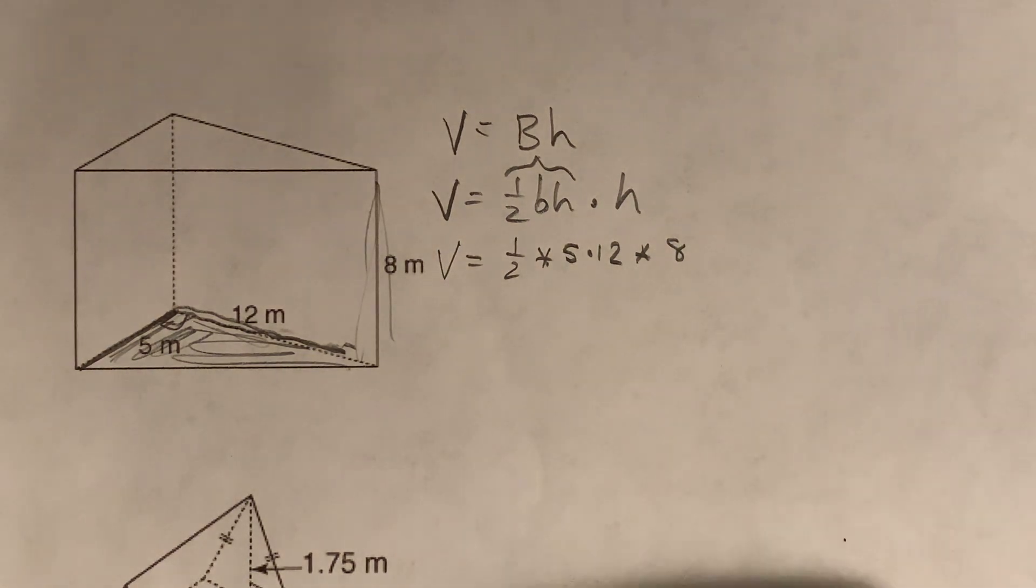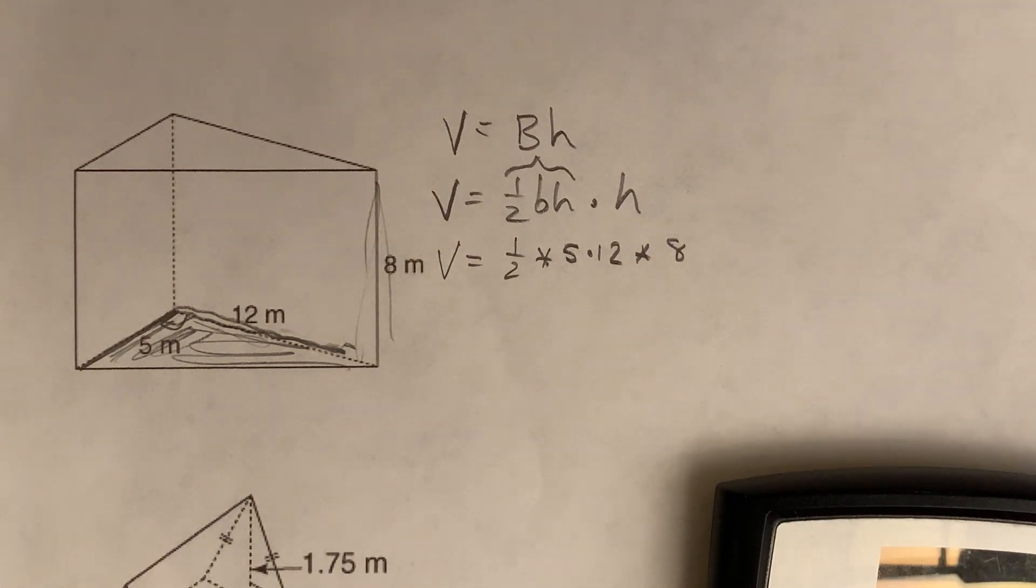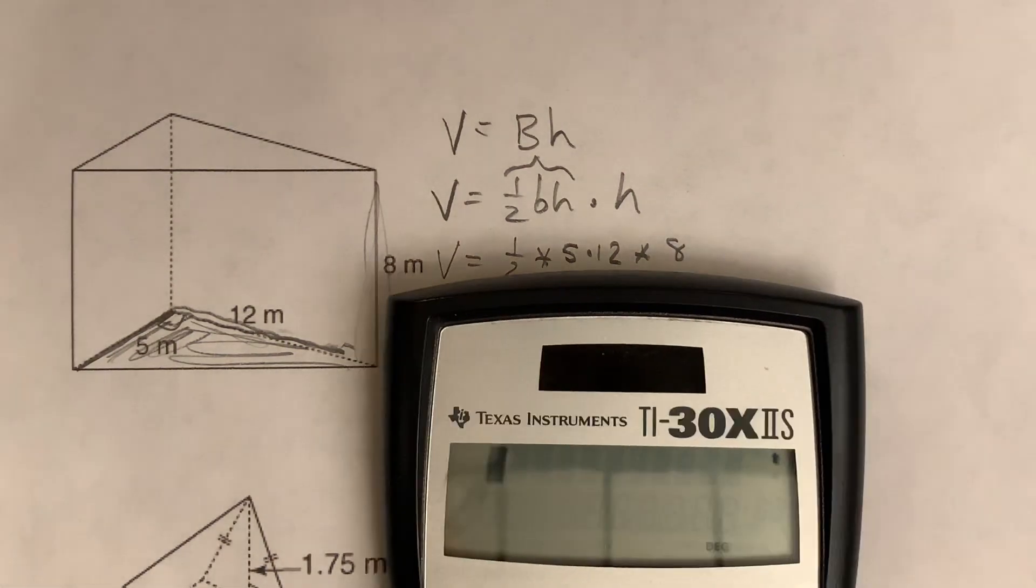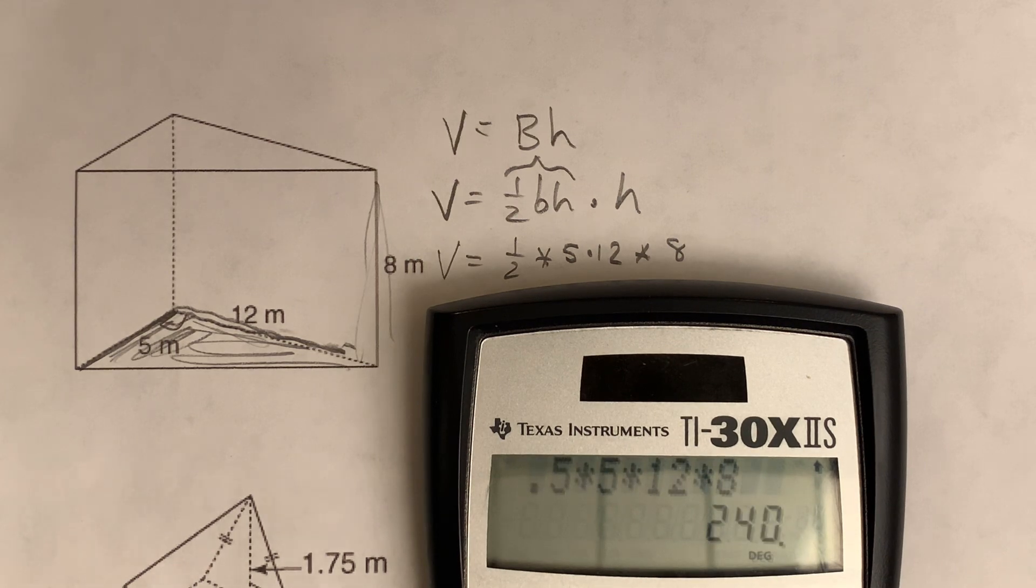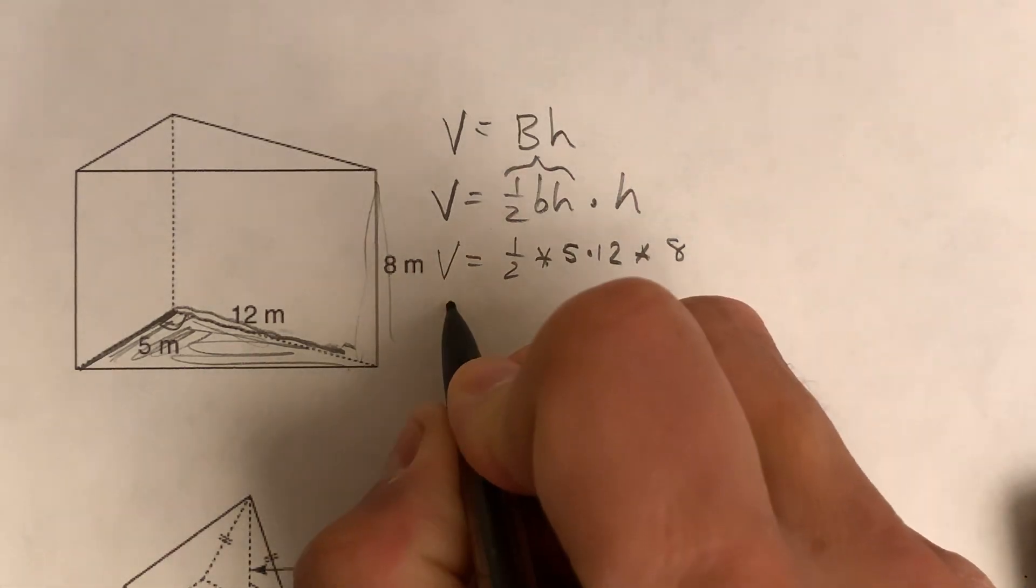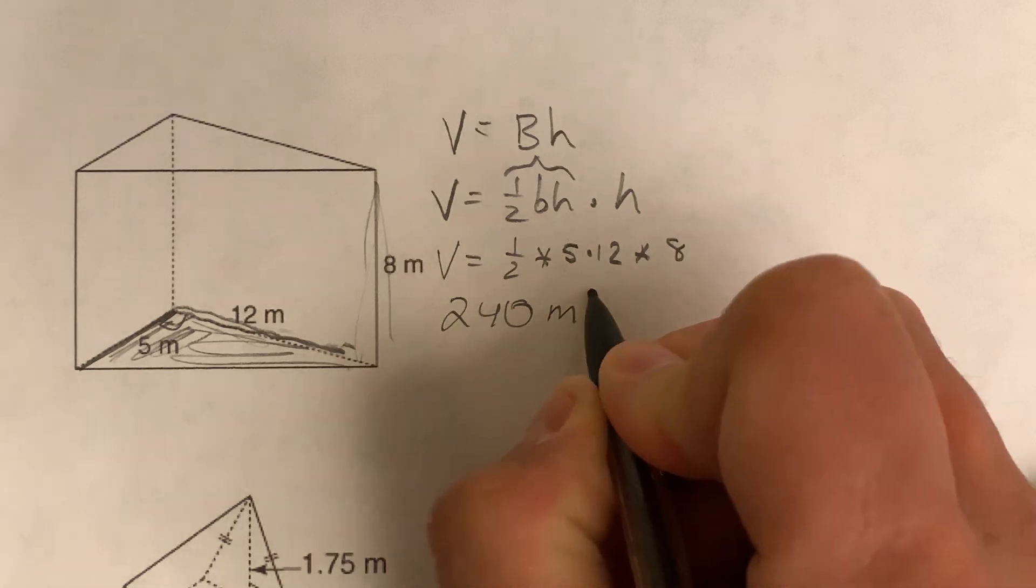So five times 12 is 60. Times half of eight is four. That's 240. Let's just double check the math there. Again, I don't want to make a mistake while on the video here. Let's throw it in and make sure it's right. Okay, 0.5 times five times 12 times eight, 240. Awesome. So we got a volume of 240 meters cubed.